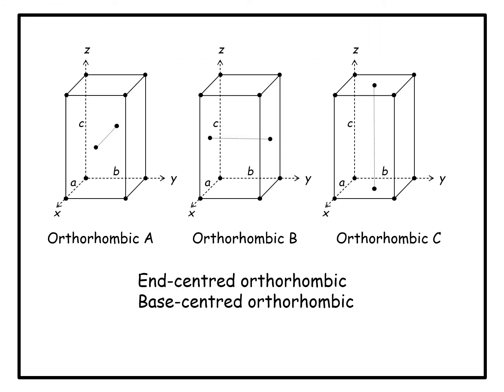In orthorhombic, there is a special kind of lattice: the end-centered lattice, also known as base-centered orthorhombic. The unit cell has lattice points at all corners as well as at the centers of only a single pair of parallel faces. The distinction from face-centered is that in face-centered, all faces are centered, whereas here only one pair of parallel faces are centered.